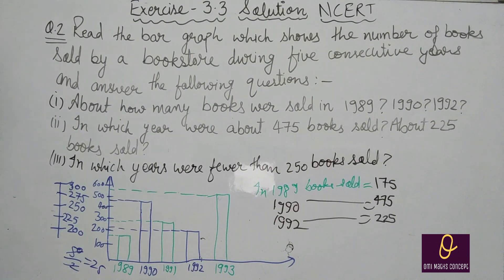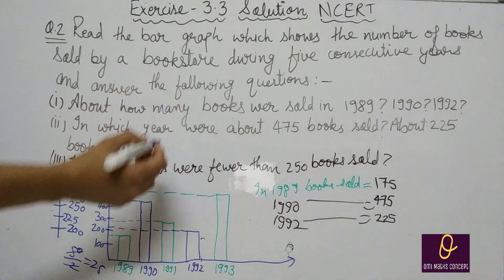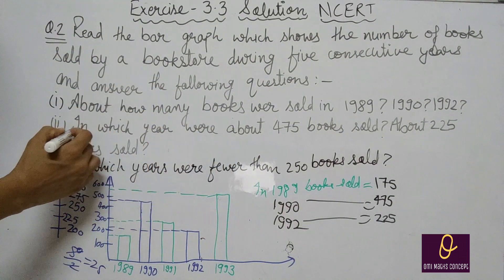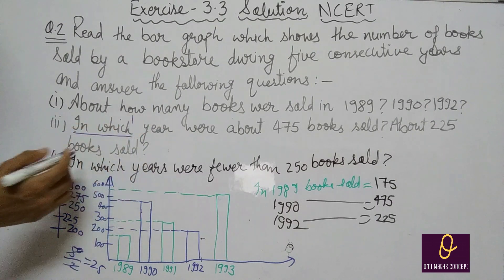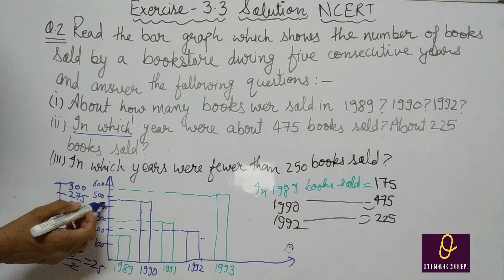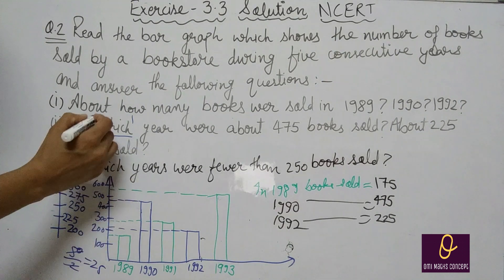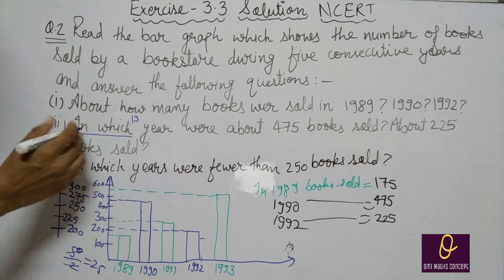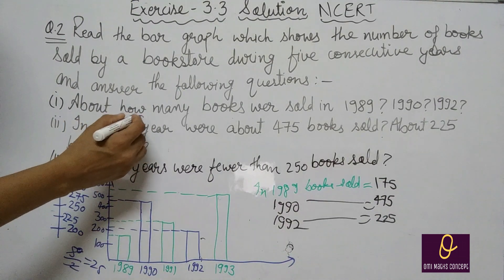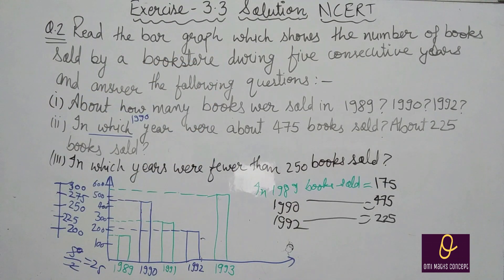अब second part देखिए: in which year were about 475 books sold? कौन से year में books about 475 थीं? उसके लिए 475 के लिए in year 1990. In 1990 there were about 475 books sold.